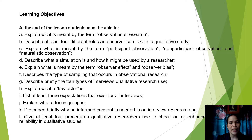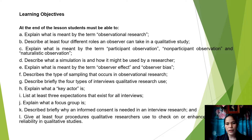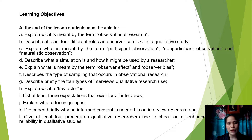Learning objectives. At the end of the lesson, students must be able to: A. Explain what is meant by the term observational research. B. Describe at least four different roles an observer can take in a qualitative study. C. Explain what is meant by the term participant observation. D. Describe what a simulation is and how it might be used by a researcher. E. Explain what is meant by the term observer effect and observer bias.